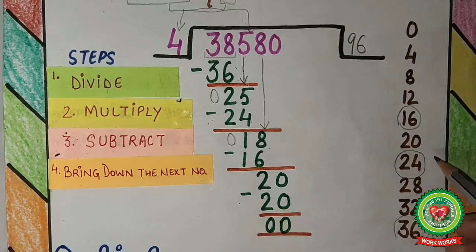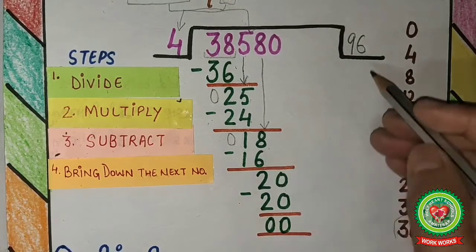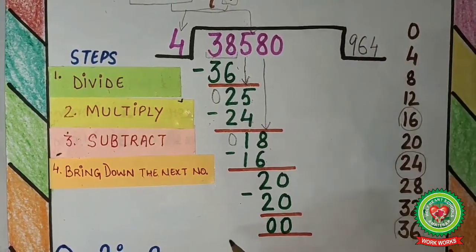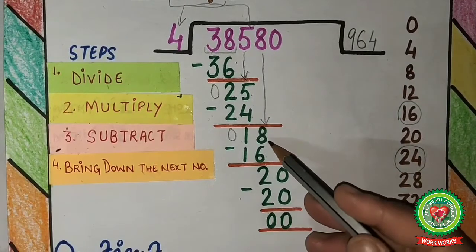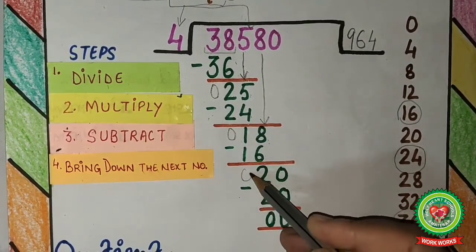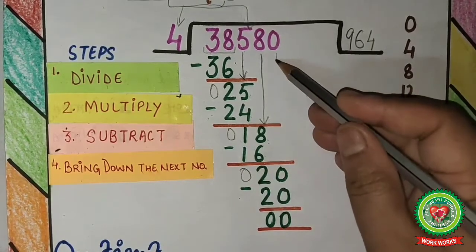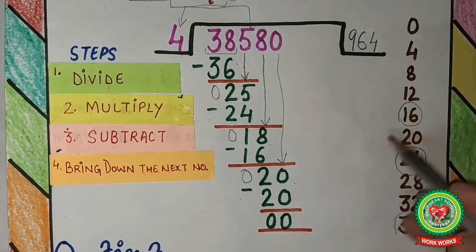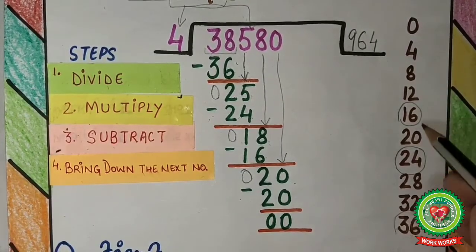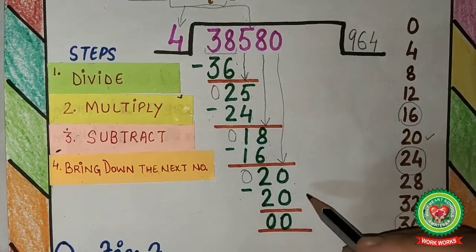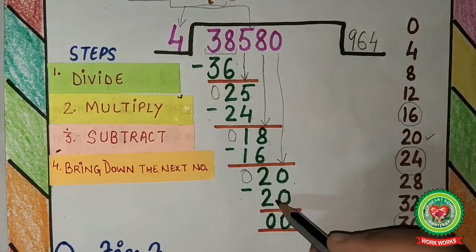16 is a multiple of 4. 4 times 4 is 16. So 16 comes here and 4 comes up in the quotient. Next step is subtract: 8 minus 6 is 2, and 1 minus 1 is 0. Bring down the next number — it becomes 20. 20 appears in the table of 4, yes. 4 times 5 is 20. So 5 comes up and 20 comes here.